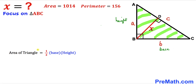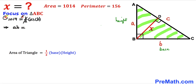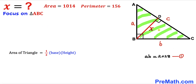We fill in the formula: 1014 equals one-half times a times b. Multiplying both sides by 2 removes the fraction, giving us a times b equals 2 times 1014, which is 2028. We label this as Equation 1.